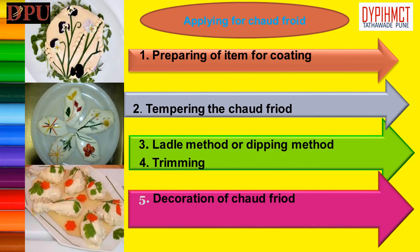Tempering the chaud-froid involves bringing the temperature of the sauce, either by heating or cooling, to a point that allows the best and easiest coating — approximately 85°F. If it is too warm, the sauce will wash over leaving a thin coat or melt the previous coat. If it is too cold, it won't form an even layer; it will lead to formation of lumps or air bubbles, and can never coat the item smoothly.